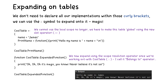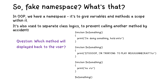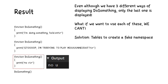You may ask yourself, why do we need this fake namespace? In OOP we have a namespace — it gives variables and methods a scope within it, and it's used to separate class logic to prevent calling other methods by accident. Which method will be displayed back to the user if we have three different functions all called do_something? The answer is the last function — only the last one is displayed. What if we want to use each of them but we can't? The solution is to use tables to create fake namespaces.